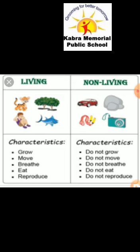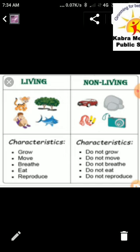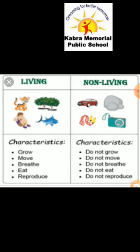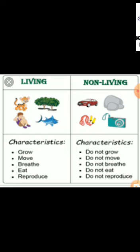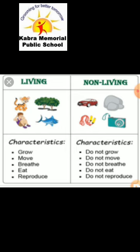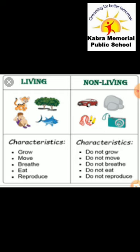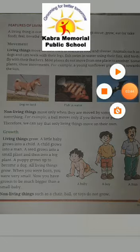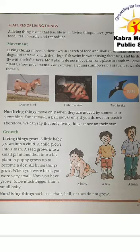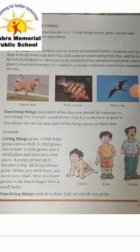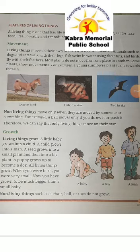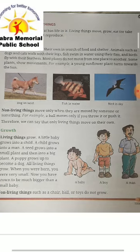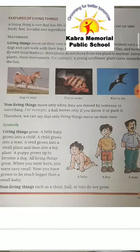For example, a table cannot create itself. Living things can reproduce, and non-living things cannot reproduce. To summarize, the characteristics of living things are: grow, move, breathe, eat, and reproduce. Anything that does not follow all these is known as a non-living thing.